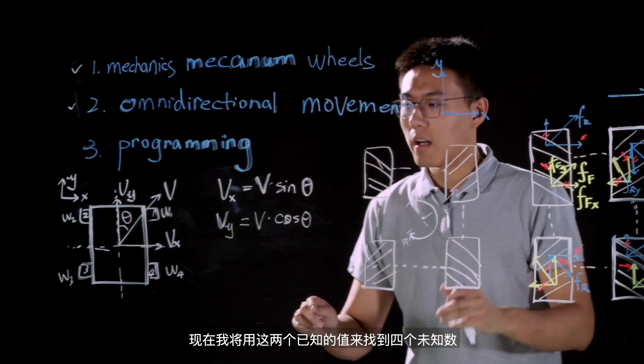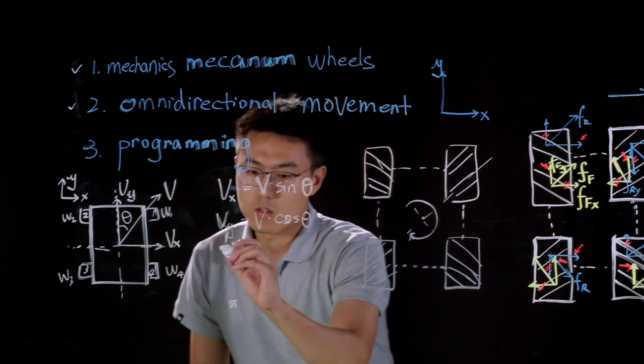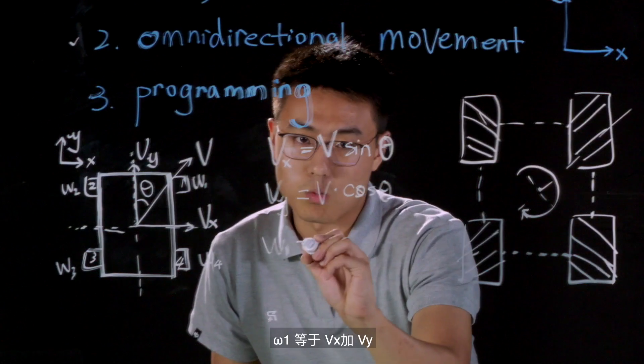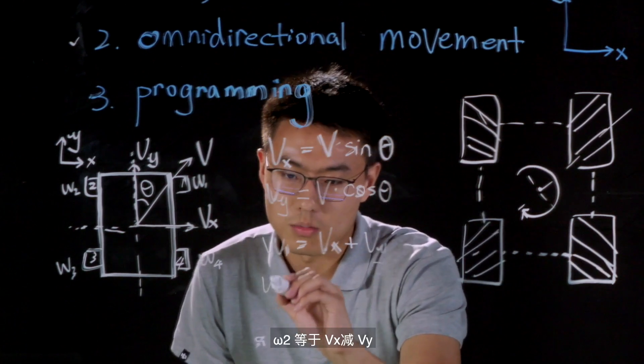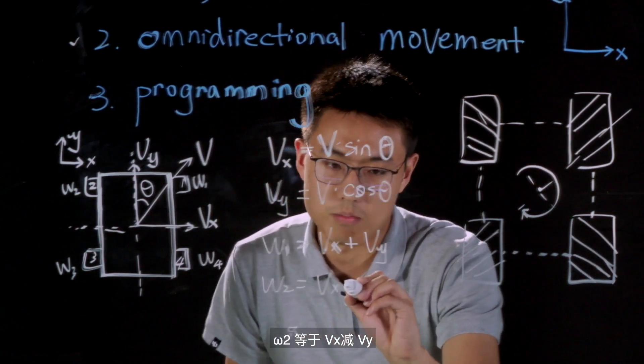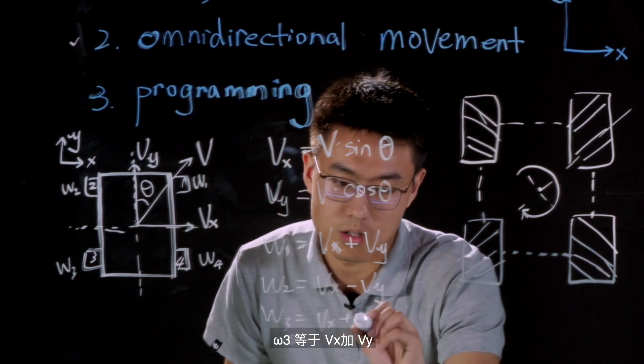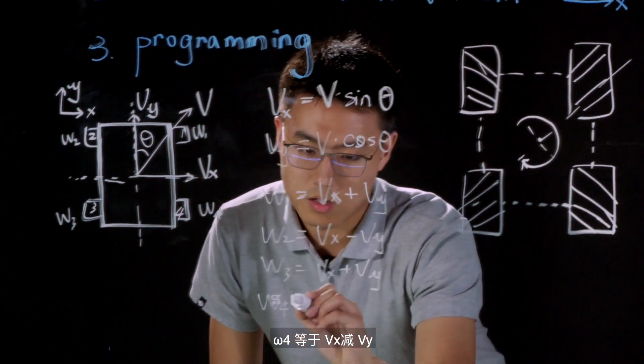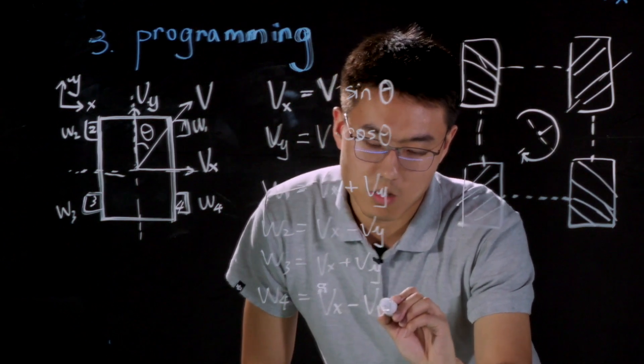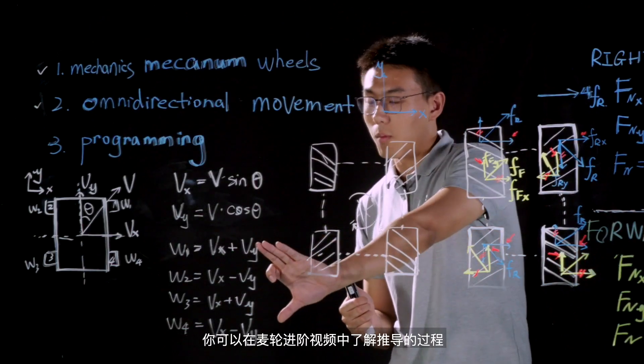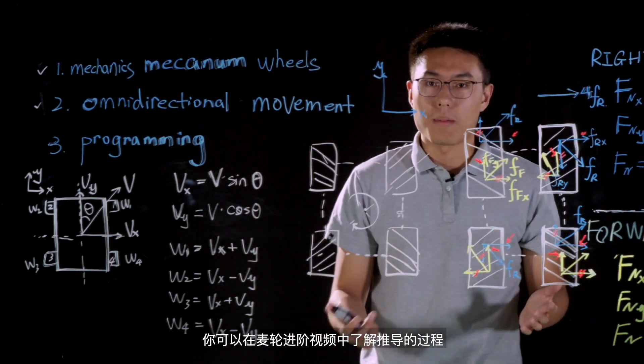Now, what I'm going to do is define these four unknowns with these two known values. And we can write down the formula. Omega 1 equals to Vx plus Vy. Omega 2 equals to Vx minus Vy. Omega 3 equals to Vx plus Vy. And omega 4 equals to Vx minus Vy. If you want to know how to derive these formulae, you can find out the derivation in our advanced video about the Mecanum Wheels.